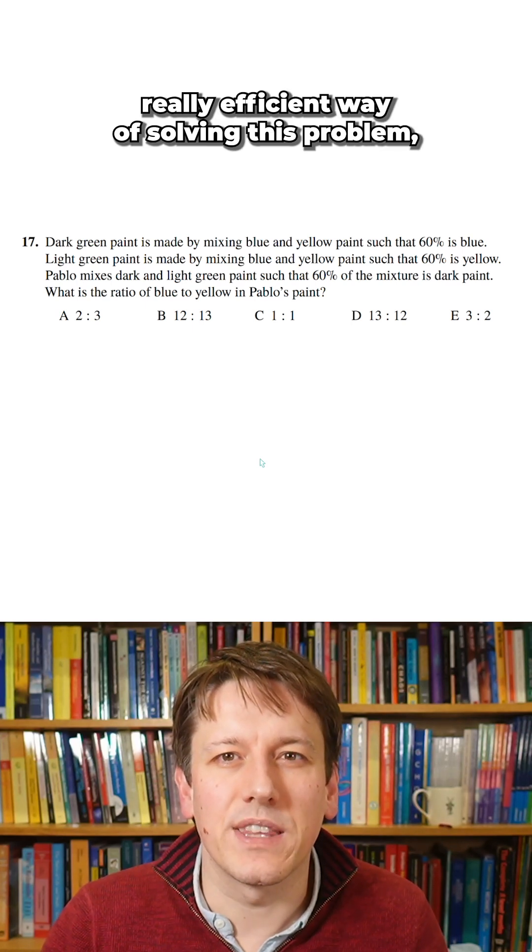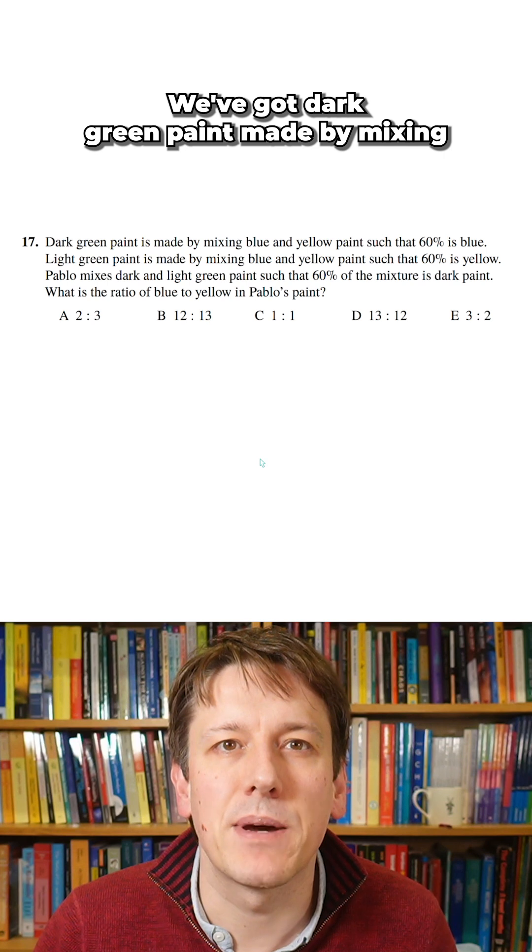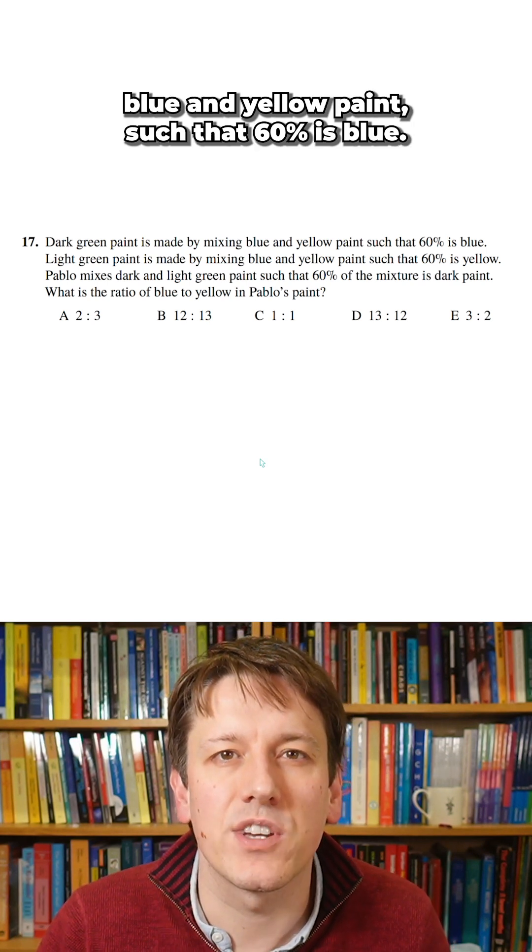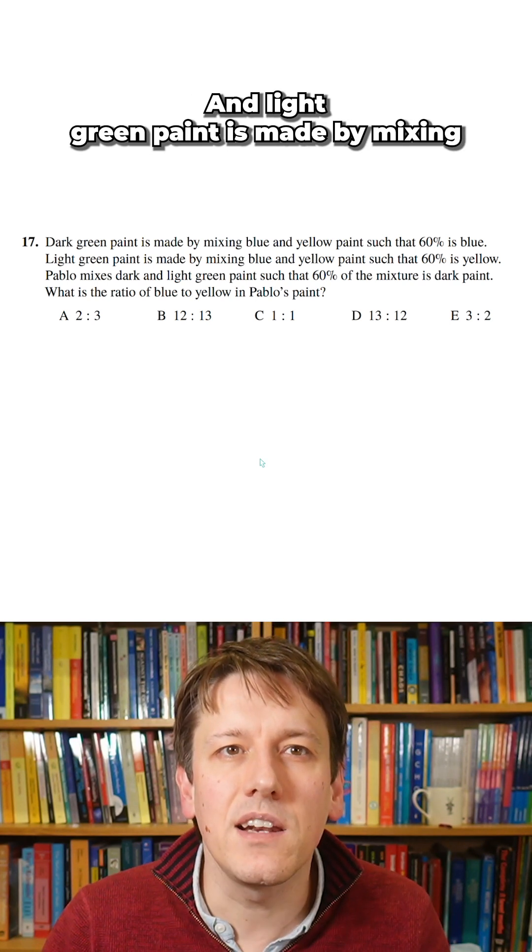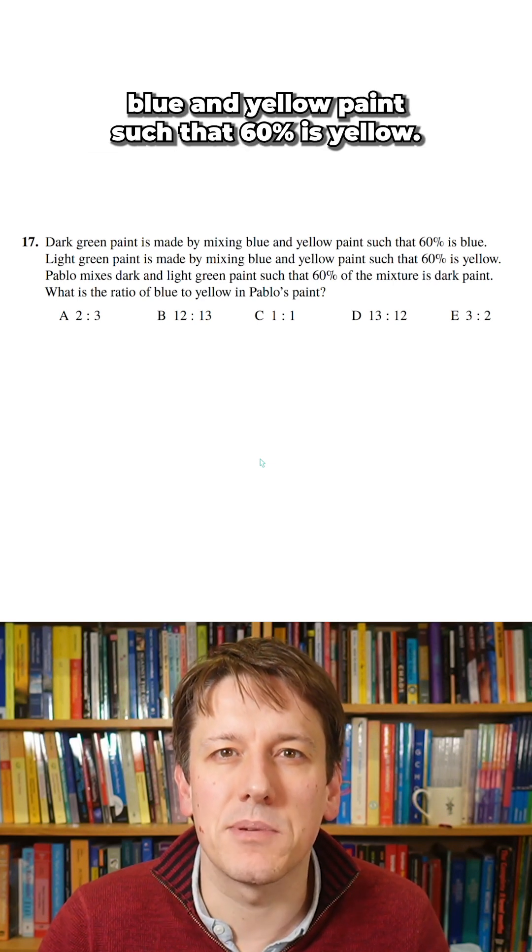I think I've got a really efficient way of solving this problem, although there are many ways to do it. We've got dark green paint made by mixing blue and yellow paint such that 60% is blue, and light green paint is made by mixing blue and yellow paint such that 60% is yellow.